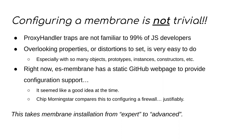The proxy handler traps, while well-defined and extremely carefully specified in JavaScript, are unfamiliar to 99% of JavaScript developers. It's very easy to accidentally overlook properties you want to hide or distortions you want to set, especially across top-level objects, constructors, prototypes, instances, arrays, sets, and maps — setting the same rules for multiple properties of multiple objects is a significant challenge. Chip Morningstar, also a TC39 member, compared this to configuring a firewall, which I think is justifiable. ES membrane takes membrane insulation from expert-level to advanced.